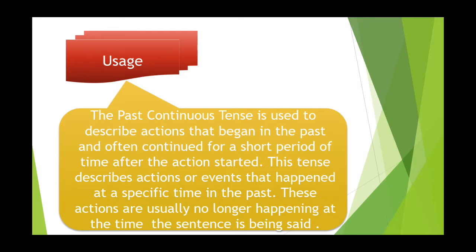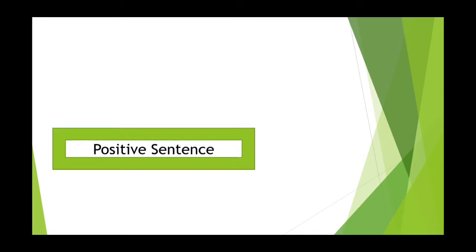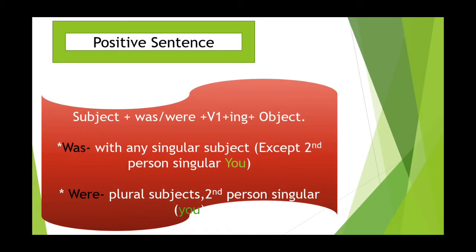These actions are usually no longer happening at the time the sentence is being said. To make a positive sentence, we use this structure: subject + was/were + first form verb + ing + object. We use 'was' with any singular subject except second person singular 'you'. With any other singular subject we use 'was' in past continuous tense. We use 'were' with plural subjects and with second person singular 'you'.